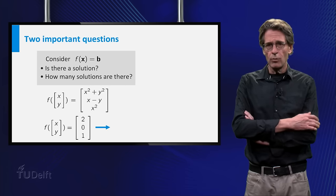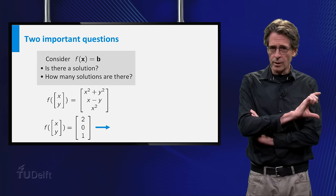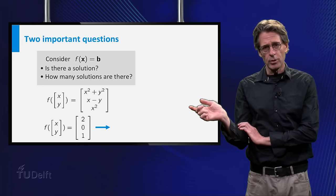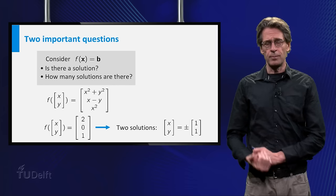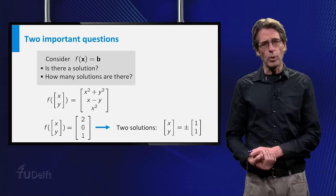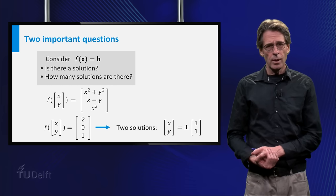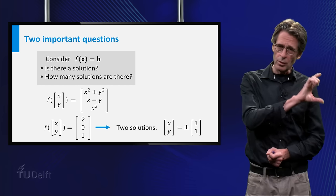And lastly, for the vector 2, 0, 1 in the codomain, there are two corresponding inputs, namely 1, 1 and minus 1, minus 1. Both f of 1, 1 and f of minus 1, minus 1 are equal to 2, 0, 1.